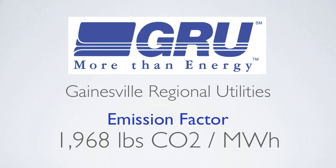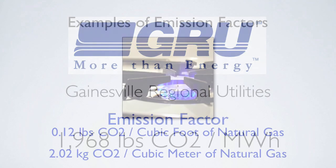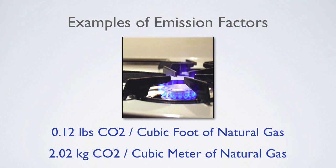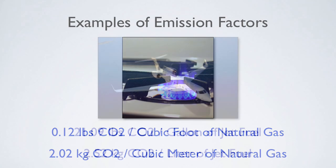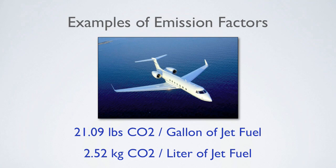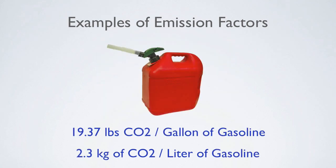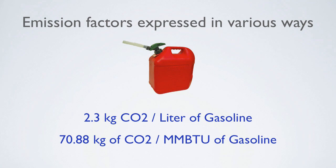Now, let's look at some other examples of emission factors which don't change over time and can typically be applied worldwide. The emission factor for natural gas is 0.12 pounds of CO2 per cubic foot, or 2.02 kilograms CO2 per cubic meter. The emission factor for jet fuel is 21.09 pounds of CO2 per gallon, the equivalent of 2.52 kilograms CO2 per liter. And the emission factor for gasoline is 19.37 pounds of CO2 per gallon, or 2.3 kilograms CO2 per liter. It is important to note that emission factors are often expressed in metric units or in terms of their energy content as opposed to their volume. For instance, the emission factor of gasoline can also be expressed as 2.3 kilograms per liter and 70.88 kilograms of CO2 per million BTUs.